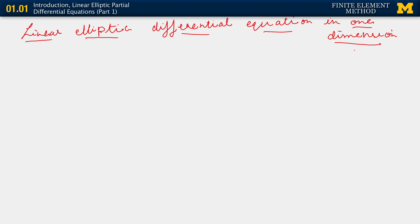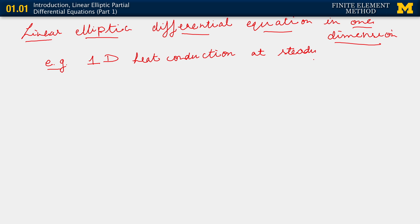There are at least a couple of examples of phenomena governed by this particular differential equation. Probably the most common one is 1D heat conduction at steady state. When we talk of the 1D heat conduction equation at steady state, it is actually the same mathematical equation as one-dimensional diffusion at steady state — that would be mass diffusion. So we also have one-dimensional mass diffusion.